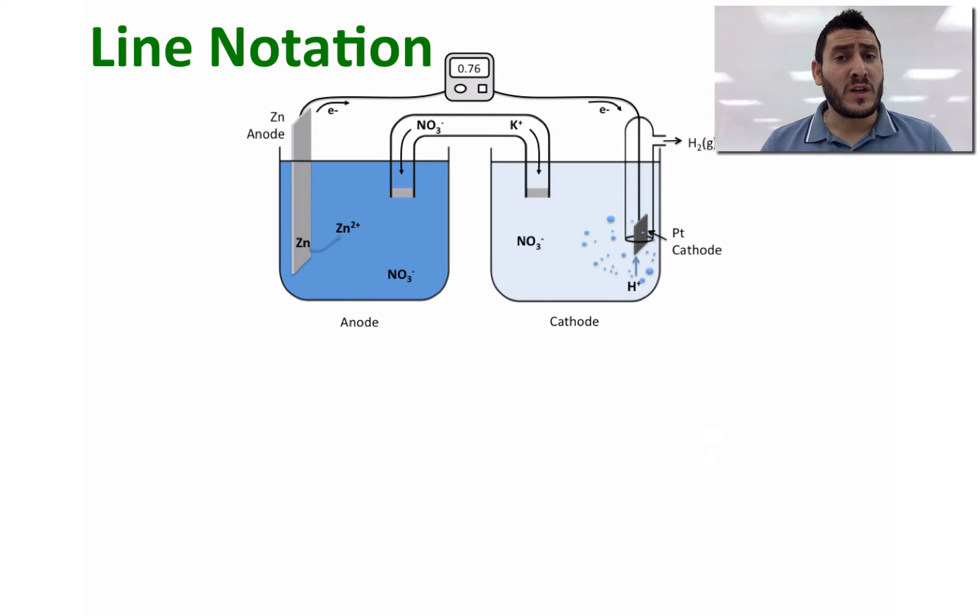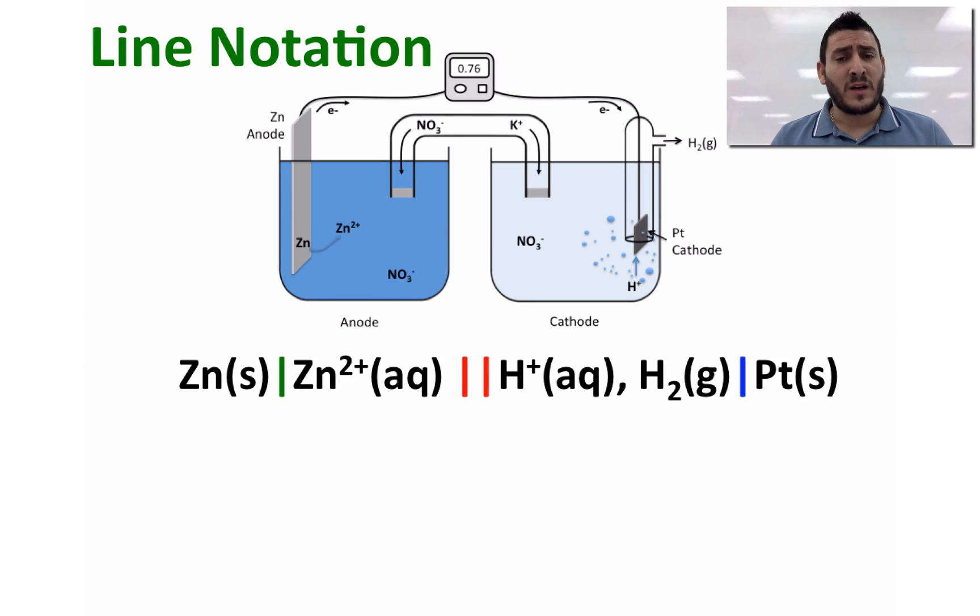Here is another example where a non-metal is used in a galvanic cell. We can describe this cell using the following line notation. The anode to the far left, the cathode to the far right, and then the two lines that represent the salt bridge or the porous disk.